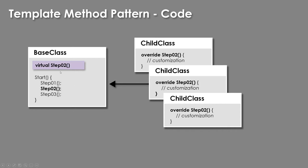We're defining one step to be modified by child classes. Notice in this case, if this is abstract, we would put it at the top and say something else needs to define what this is — it has no content, we want something else to give it content. If you just want to override some base functionality, you label it virtual and then override it that way. In our child classes, we say override step two, and we hook in and say: don't do that, do this custom behavior instead.